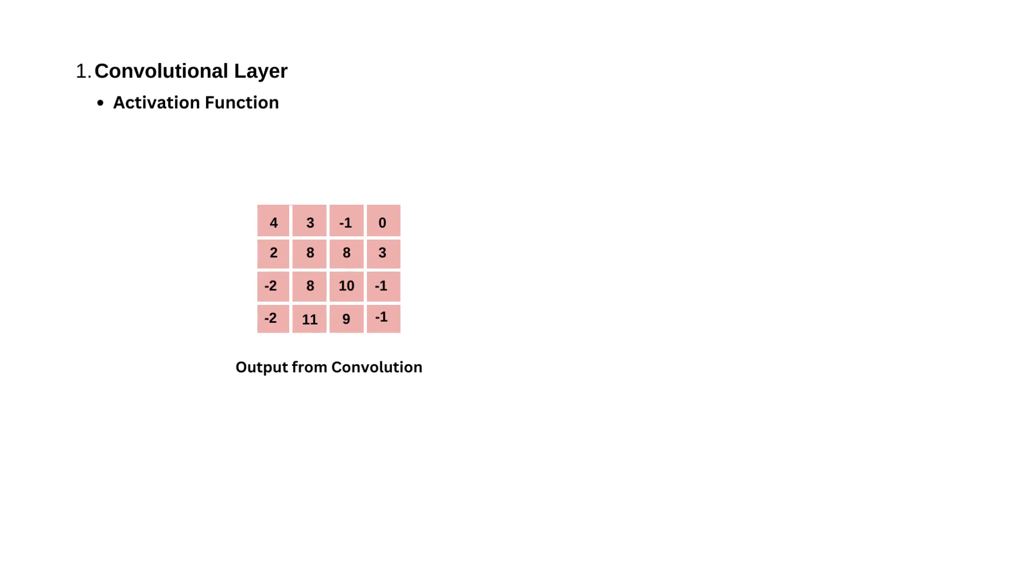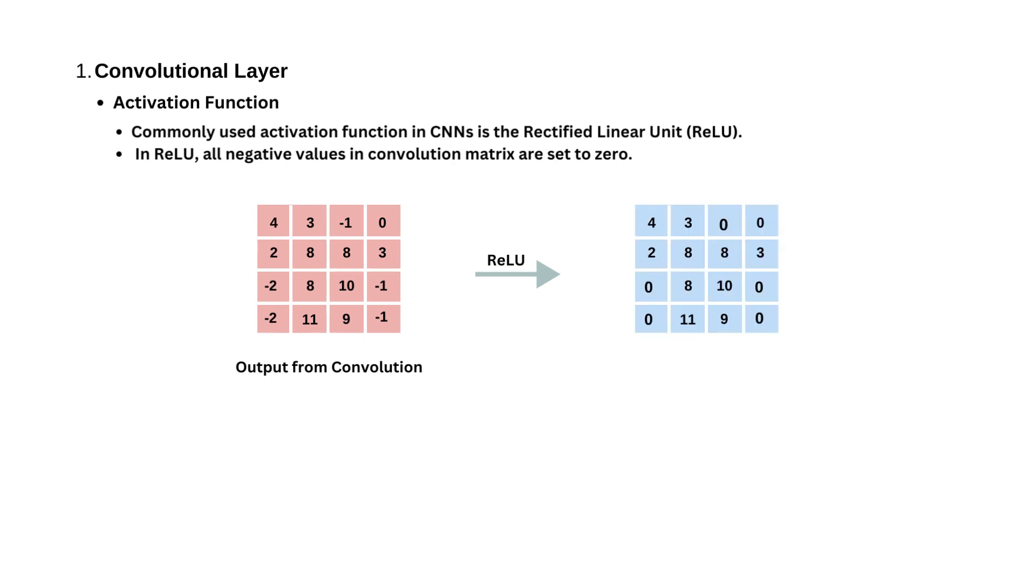After convolution, an activation function is applied to introduce non-linearity into the network. The most commonly used activation function in CNNs is the Rectified Linear Unit or ReLU. In ReLU, all negative values in the convolution matrix are set to zero. This simple non-linearity using activation functions enables CNNs to learn complex representations.